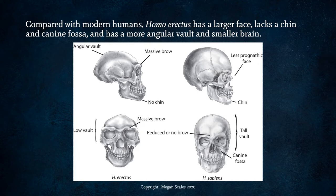Modern humans have a tall cranial vault and a forehead. Imagine putting your hand on the Homo erectus skull to feel for a fever, and then feeling your own head — you can tell that we have this larger, taller cranial vault that Homo erectus did not have. A lot of this is just due to brain size increase, and you can see that when you look at the profiles of these two skulls in comparison.